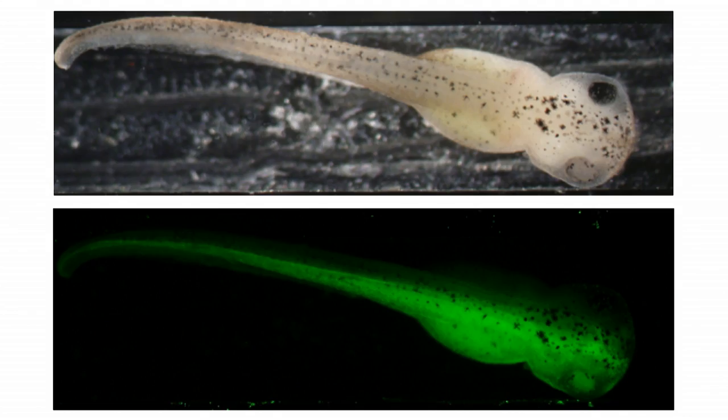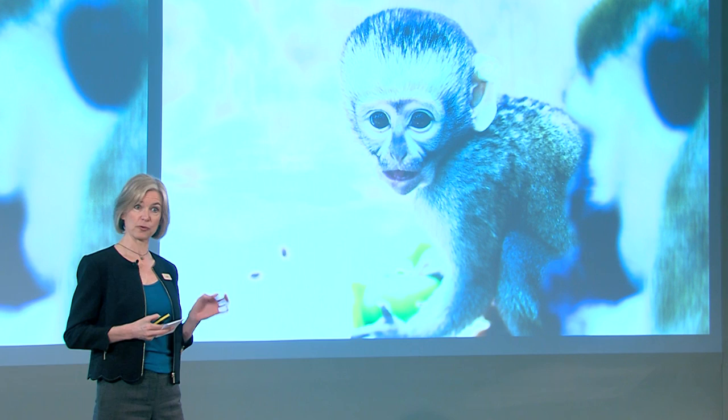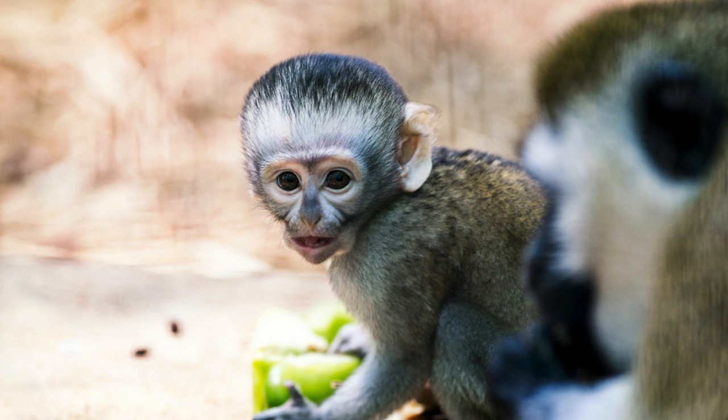It turns out that this kind of germline editing works in other animals — it also works in mammals, it works in monkeys. An experiment that was published in early 2014 illustrated this, in which monkeys were treated in the same way I just showed you with the frog embryos — edited in the germline so that the resulting animals could pass on those genetic changes to their progeny. And for me, this was kind of the moment when I realized that as excited as I was about this technology, I started to feel a little bit nervous.